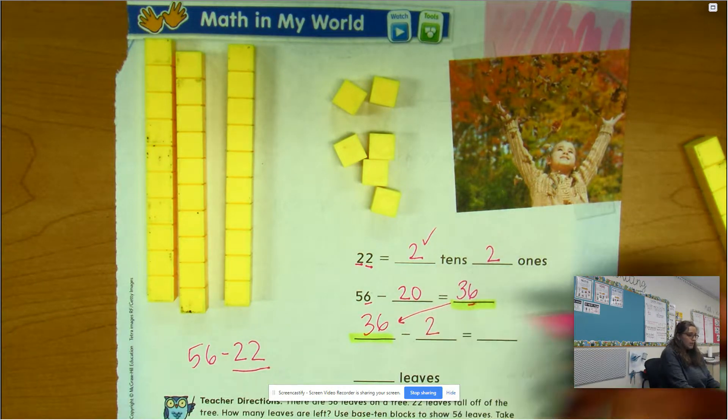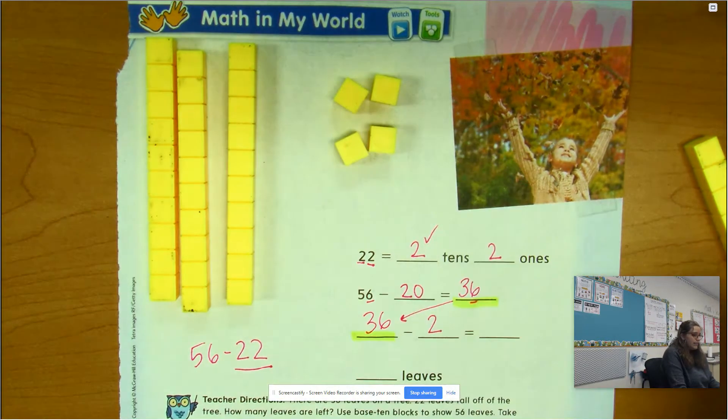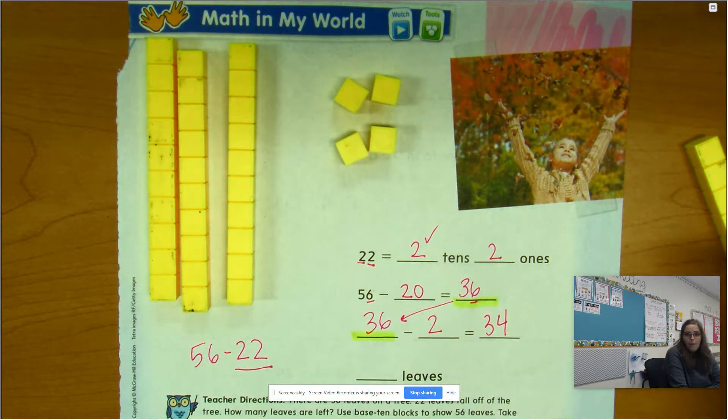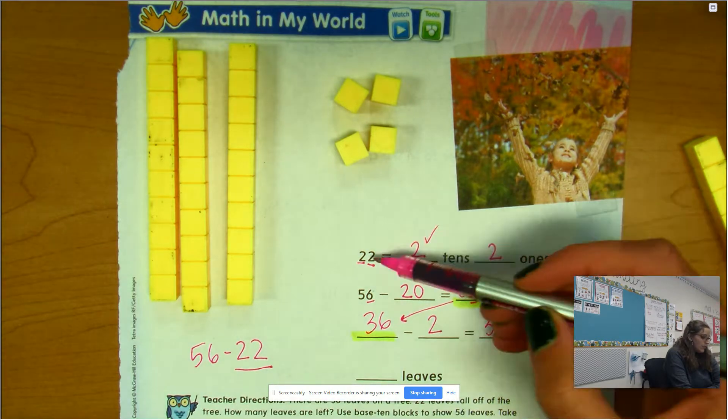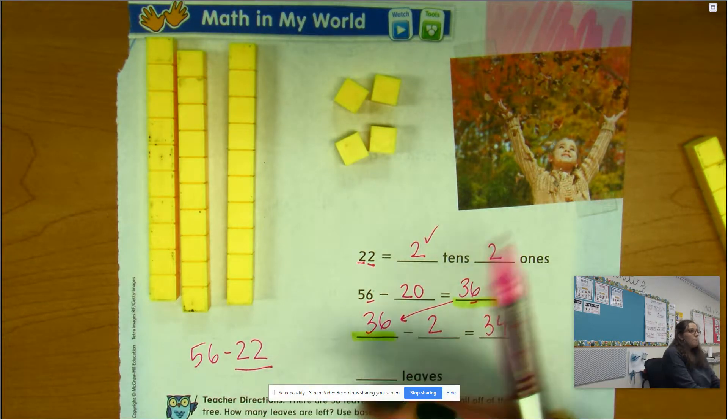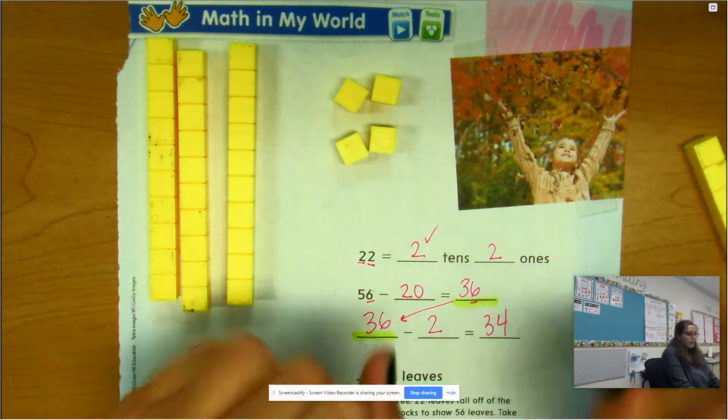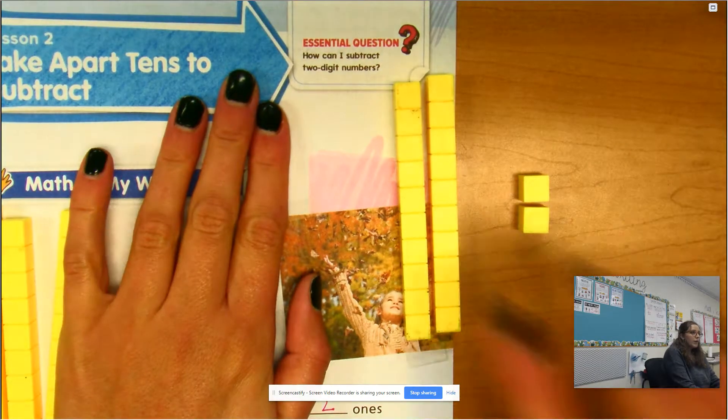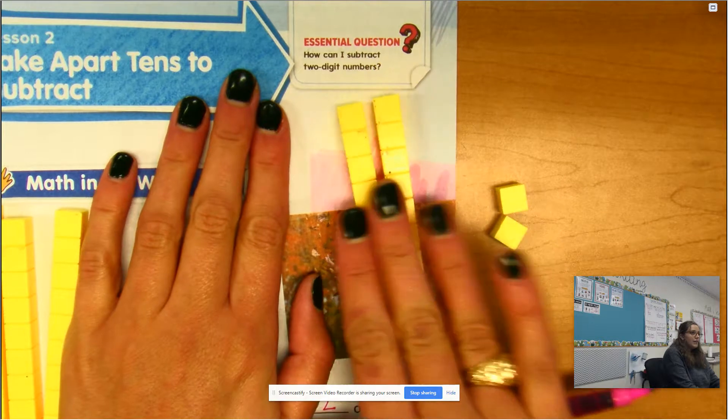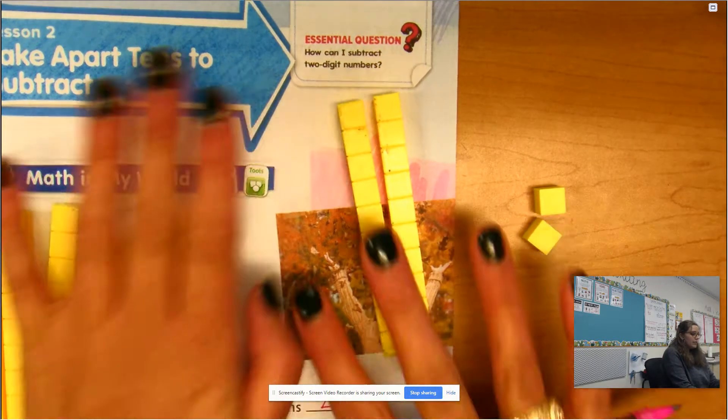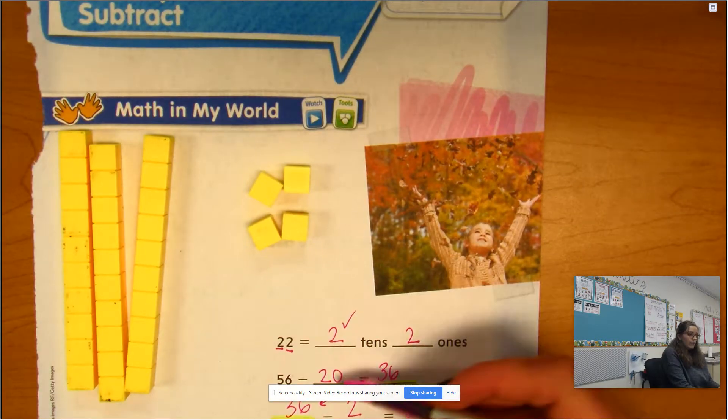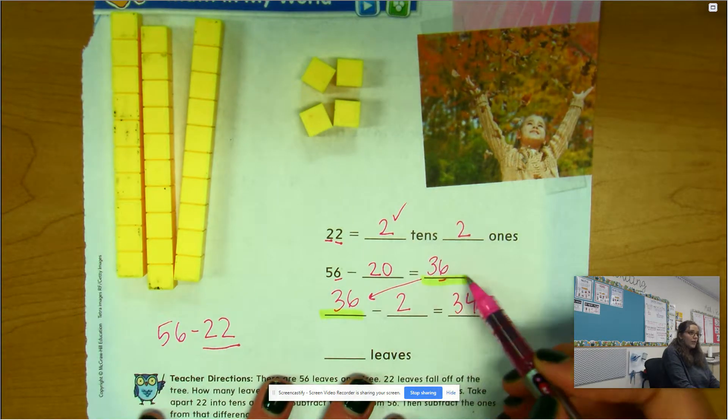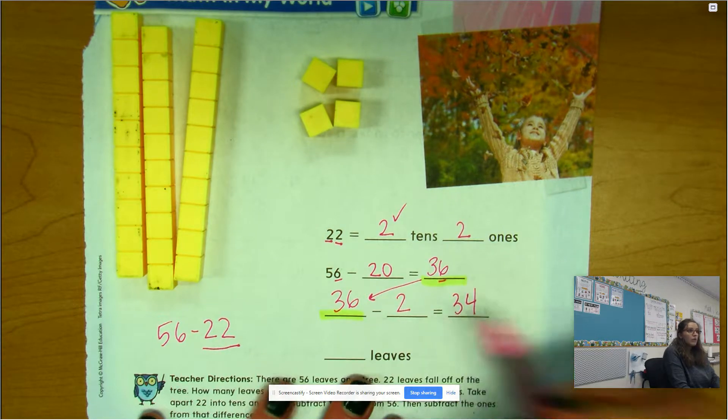All I did is I took that second number in the subtraction and broke it apart into tens and ones. If I had 22, this is 22 right here. If I broke it apart into tens and ones, it would be two tens and two ones. That's all I did on that first step. Then I said, 'I'm going to take away the tens first,' so that's minus 20. After I take away the tens, I'm going to start with that number that I got, and then I'm going to take away the ones.